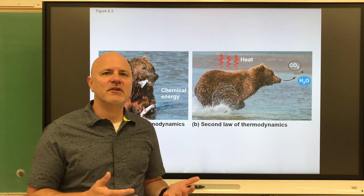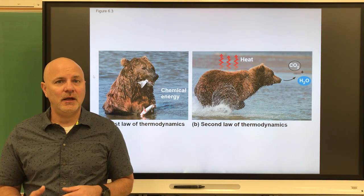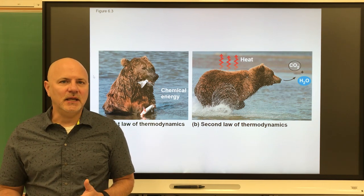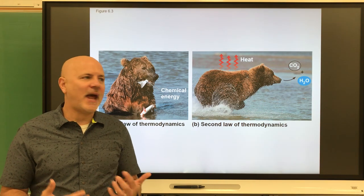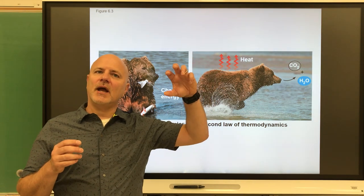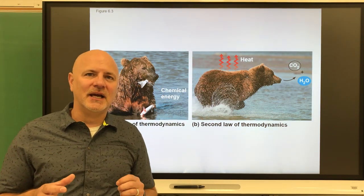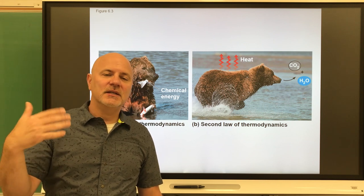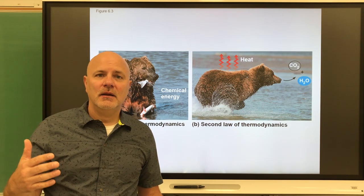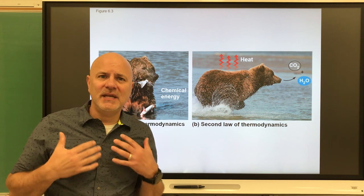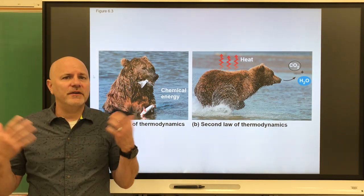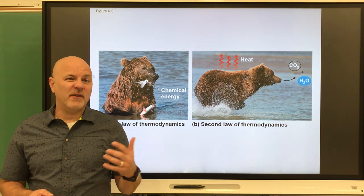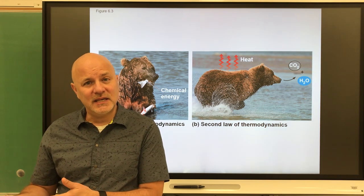The second law of thermodynamics states that energy cannot be changed from one form to another without the loss of usable energy to that system. In any energy conversion, we lose some energy as heat, and heat is hard to convert back into potential energy. For example, incandescent lights are not 100% efficient — they convert electrical energy into light but also release heat. The energy conversions in our body maintain our body temperature. Only 40% of the energy in a glucose molecule is converted directly into ATP, which is available for use.